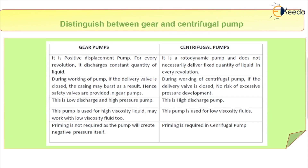How can we distinguish between a centrifugal pump and a gear pump? The gear pump is known as a positive displacement pump — it always delivers a constant quantity of liquid. In the case of a centrifugal pump, it is a rotodynamic pump and does not necessarily deliver a fixed quantity of liquid. In the gear pump, we do have a fixed quantity of liquid being pumped.